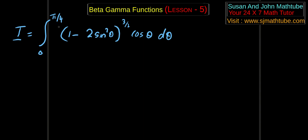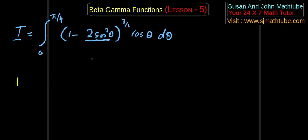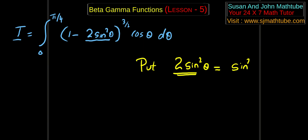Another problem is that we have 1 - 2sin²θ. Some of you might remember trigonometric formulae and convert this into an entirely different problem. I know 1 - sin²(something) will be cos², but the problem is we have this 2. So what I did is I took 2sin²θ and I am going to substitute this as sin²t — I told you I am going to do something weird. Taking square root on both sides, I get √2 · sinθ = sin t.